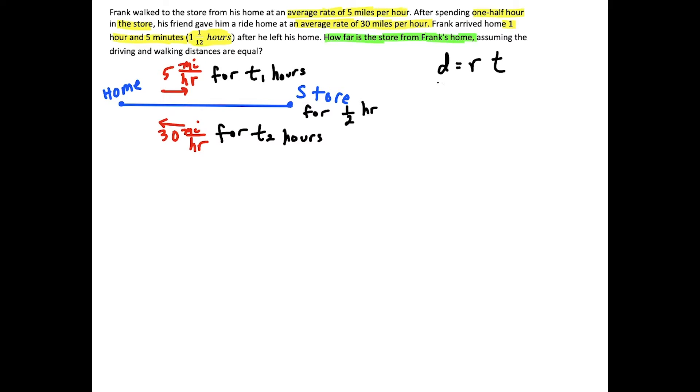But then if we use this idea that the distance traveled is equal to the rate that you travel times the time that you're traveling, well then the distance from home to the store is going to be equal to 5 times T1. And we could set this equal to 30 times T2 because we're assuming that the driving and walking distances are equal. And the challenge here is coming up with a way to express T2 in terms of T1 because in algebra the only way you could solve an equation is when we have exactly one variable in our equation. Because right now there's too many possibilities for what T1 and T2 could be.